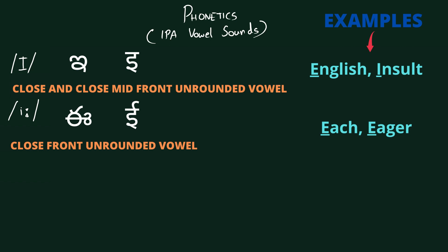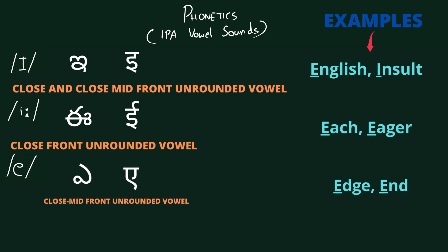The next one is /e/. It is a close-mid front unrounded vowel. Examples are: edge, end.